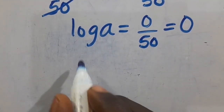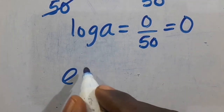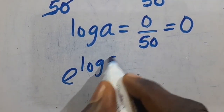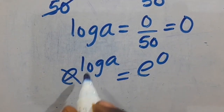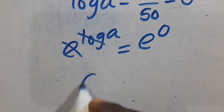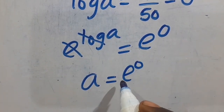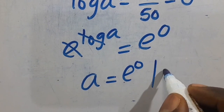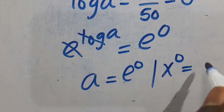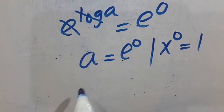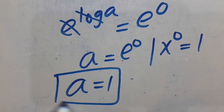From here, we eliminate the log by taking the exponent of both sides. So A equals e to the power of 0. Remember that any number to the power of 0 gives us 1. Therefore, A equals 1 as the first solution.